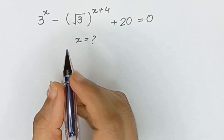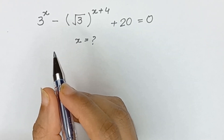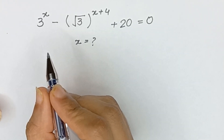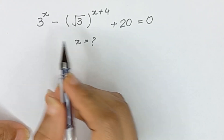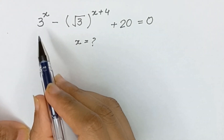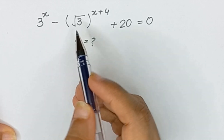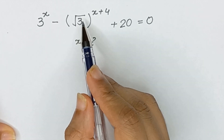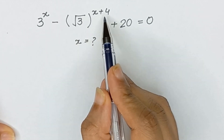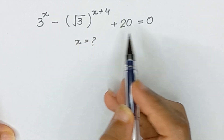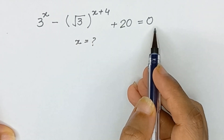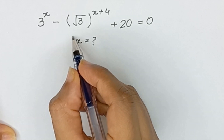Hello friends, welcome back to my channel. In this video we will solve a nice equation which is 3 to the power x minus square root of 3 whole power x plus 4 plus 20 is equal to 0, and we will solve this equation for x.